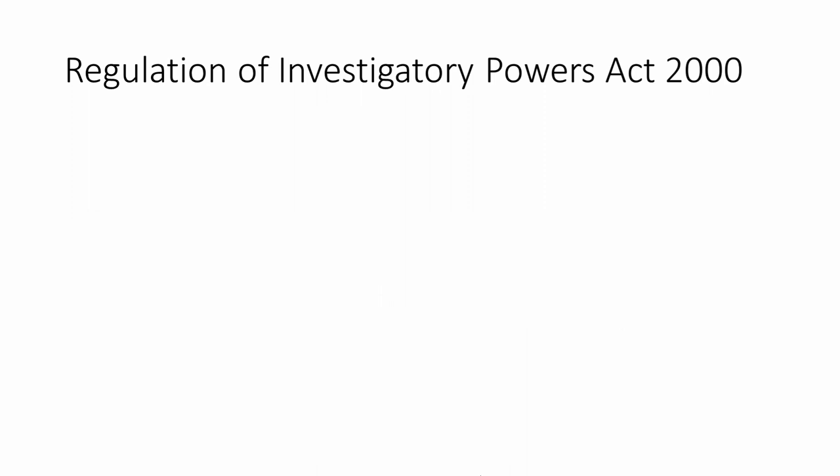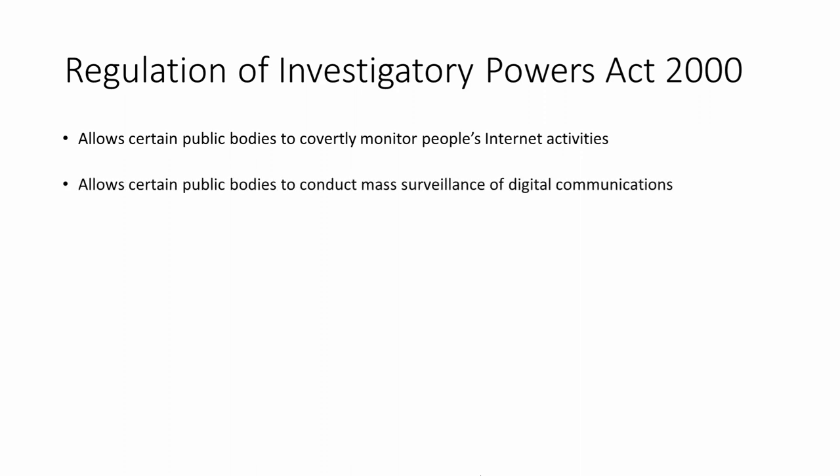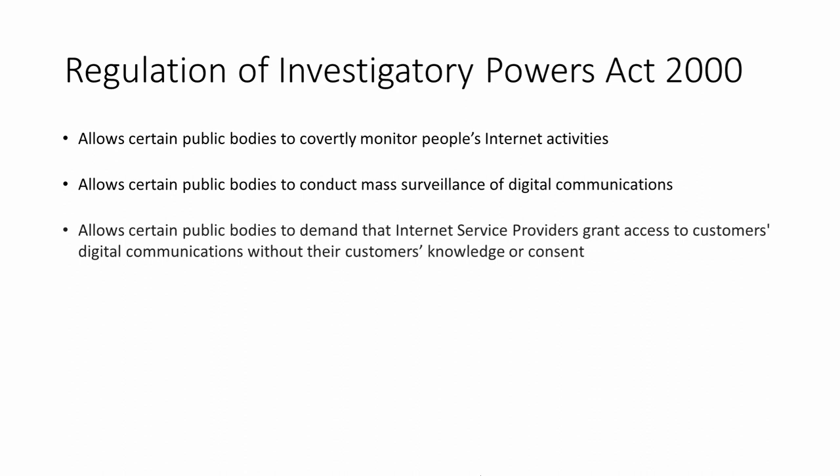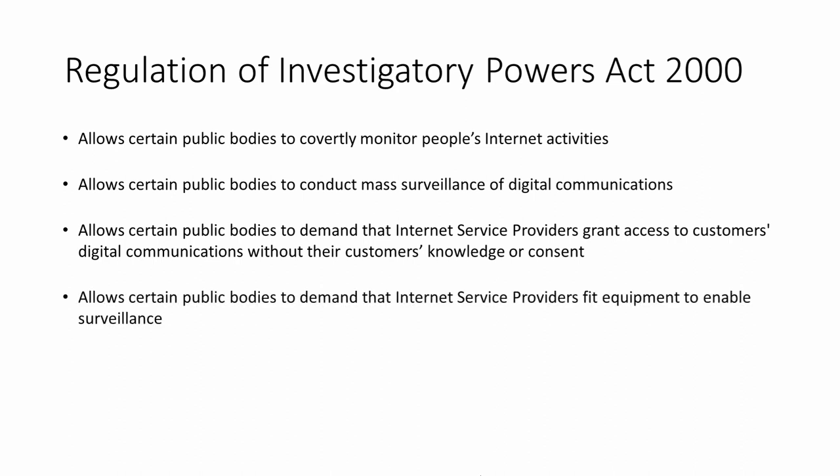Here's a summary of the Regulation of Investigatory Powers Act 2000. It allows certain public bodies to monitor people's internet activities — to see what they're up to online. It allows certain public bodies to conduct mass surveillance of any form of digital communication — potentially most or all of the population. It allows certain public bodies, in particular the police and intelligence services, to demand that internet service providers grant them access to customers' digital communications without the customer's knowledge or consent, and to demand that internet service providers fit equipment to carry out covert surveillance at the ISP's own expense.